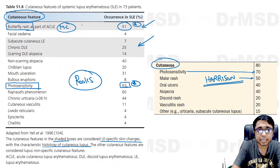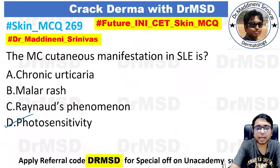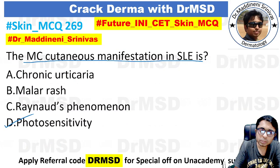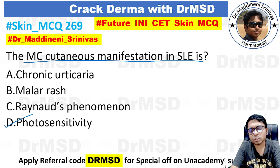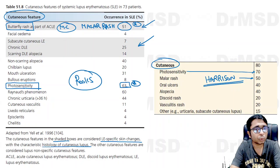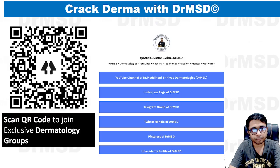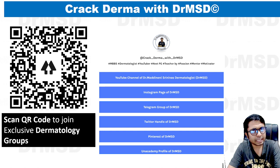You can see here this is the malar rash. Whereas the most common overall cutaneous manifestation is photosensitivity — which is what most patients come to us complaining about.